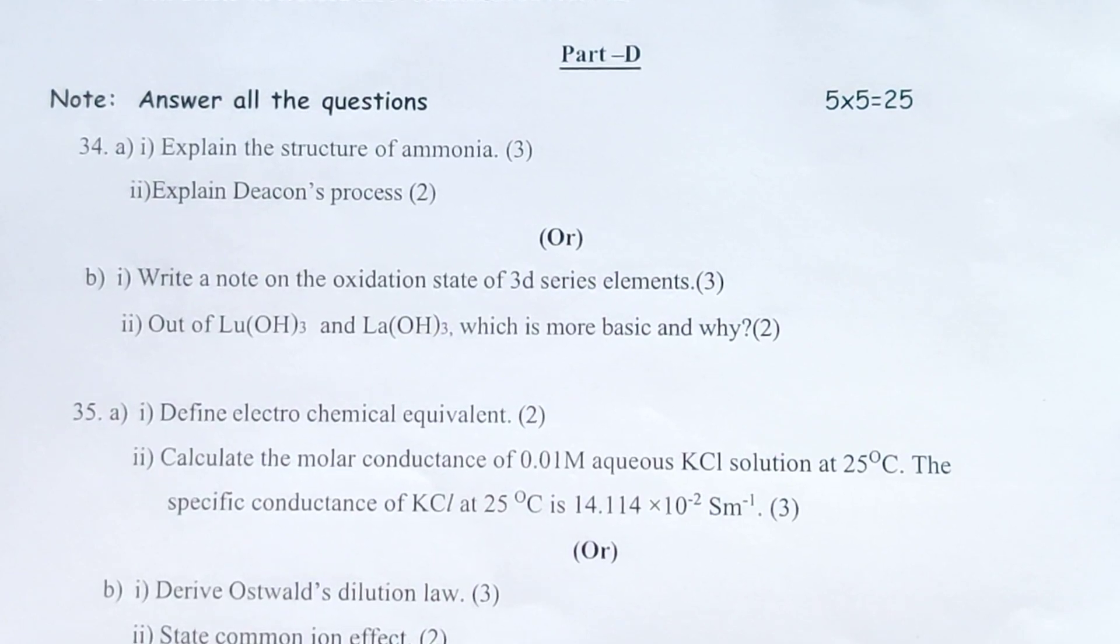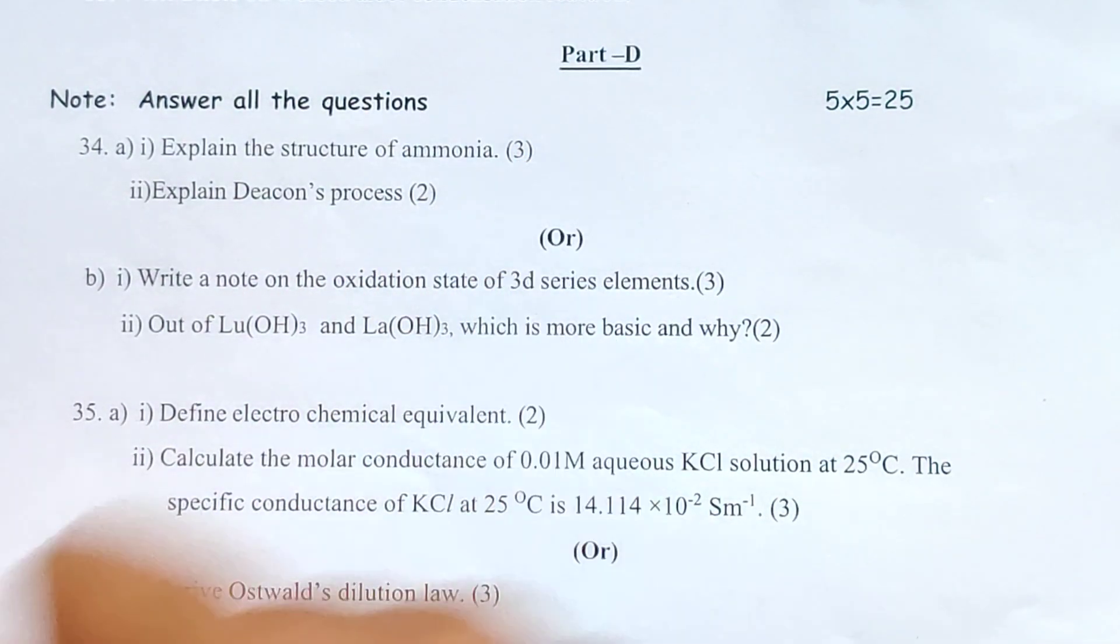Part D. Answer all the questions. 34. i) Explain the structure of ammonia. ii) Explain Deacon's process. Or, i) Write a note on the oxidation state of 3D series elements. ii) Out of Lu(OH)3 and La(OH)3, which is more basic and why?